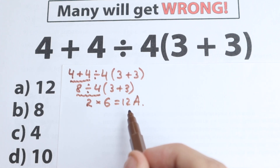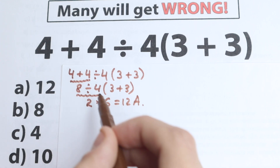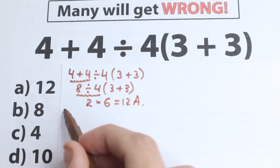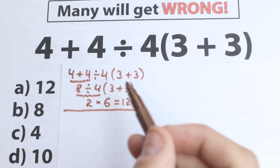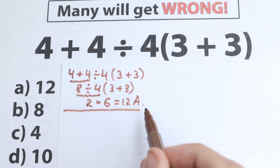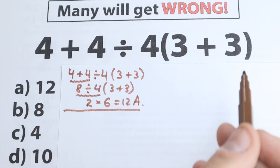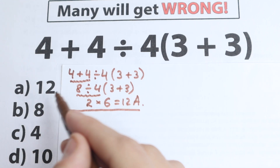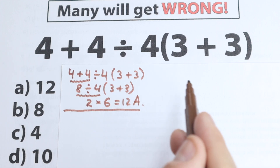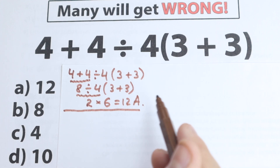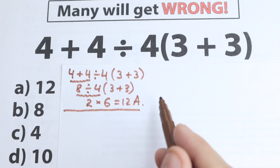I don't want to say yet whether this is correct or incorrect. What I want you to understand is that in math we need to know the one and only correct order of operations. We cannot solve it chaotically, we cannot jump from left to right or do whatever we want — we need to follow the one correct order of operations.